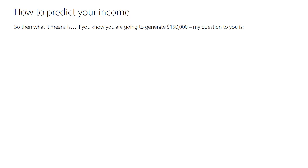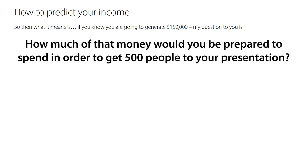What this means is: if you know you're going to generate $150,000, then here's the question — how much of that money would you be prepared to spend, or invest, in order to get 500 people to your presentation? Because you know that if you get 500 people to sit through your presentation, you make $150,000. It's as good as gold — you know your conversion rate, so it's going to happen. A lot of people think, 'I don't have the money to advertise. I don't know how I'm going to get in front of those people.'